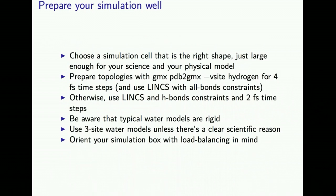Getting a simulation to run fast starts very early in the simulation process. You want to choose a box that is just the right shape and just large enough for your science using the model physics you are using. If you are modeling a small protein that is approximately spherical, you would really like your simulation cell to be approximately spherical as well. GROMACS has support for a wide range of simulation cell shapes, ranging from cubic all the way through to general triclinic cells that allow rhombic dodecahedra — the smallest shapes that can tessellate over 3D space using periodic boundary conditions.